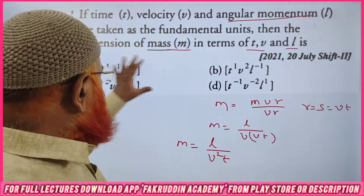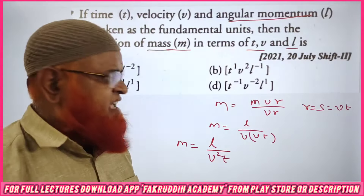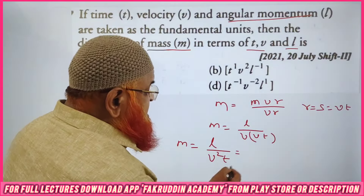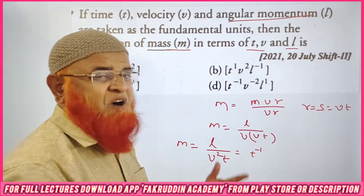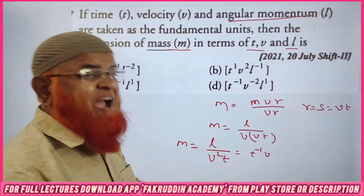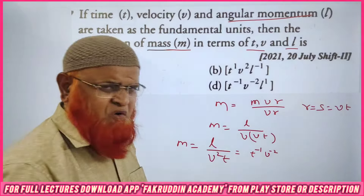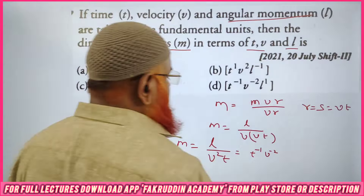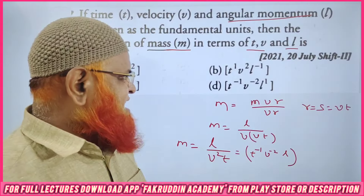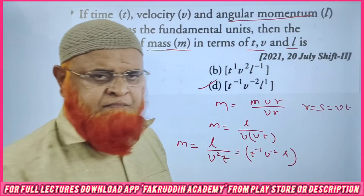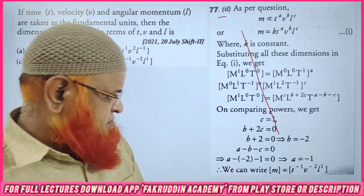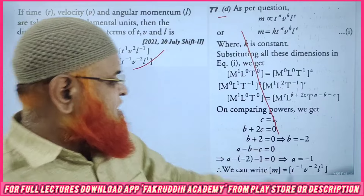See what is there in the four options. Time is coming first, velocity next, angular momentum last. Time is in the denominator as T to the power minus 1, velocity in the denominator as power of minus 2, and angular momentum is in the numerator as usual. So your correct option is D option — D is going to be the correct option.